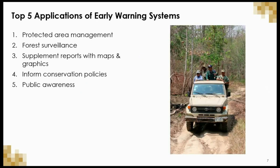What are the top five applications of early warning systems? They include management of protected areas in terms of response, monitoring, and planning. Early warning systems also facilitate forest surveillance, provide additional dimensionality to reports by supplementing with maps and graphics to ensure transparency, inform conservation policies, and increase public awareness of threats and alerts.